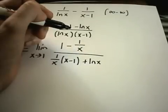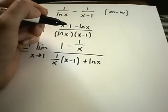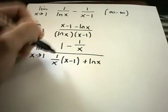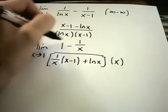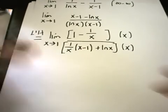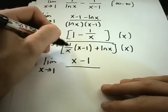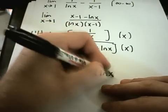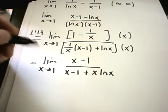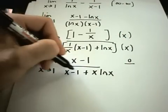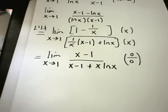Now I want to clean this up. I'm going to multiply top and bottom by x to get rid of the 1 over x. Multiplying the numerator by x gives x minus 1. The 1 over x cancels in the first term, leaving x minus 1 plus x times ln of x in the denominator. You've got to be careful with your algebra. If we plug in 1 at this point, we get 0 on top and 0 on the bottom — so I can use L'Hôpital's rule yet again.